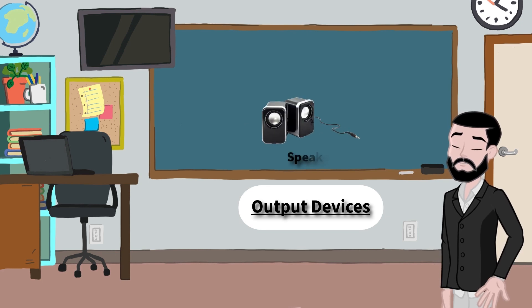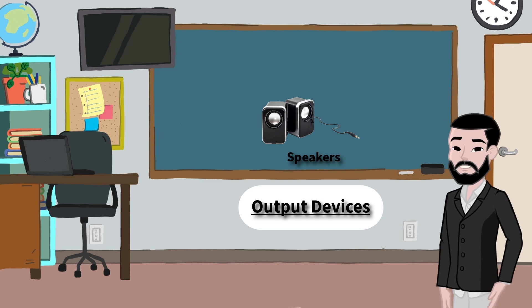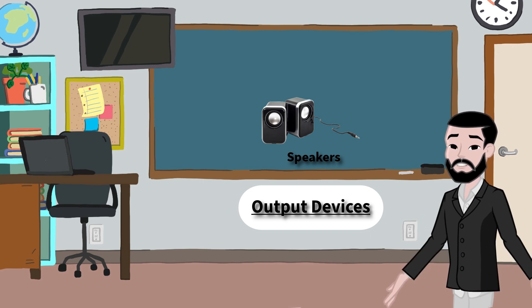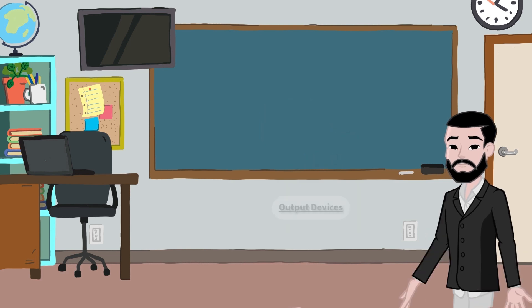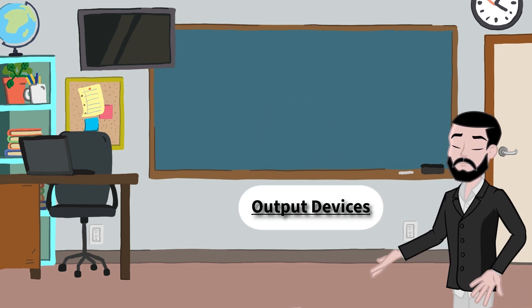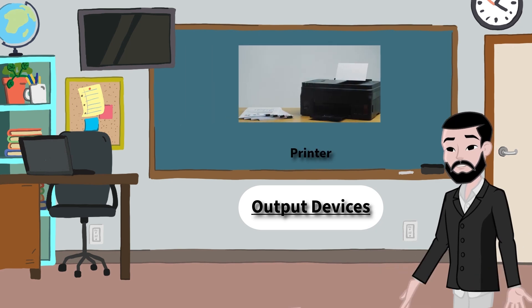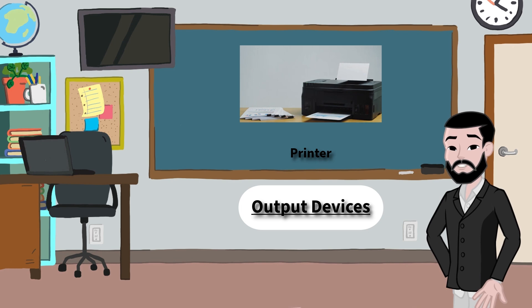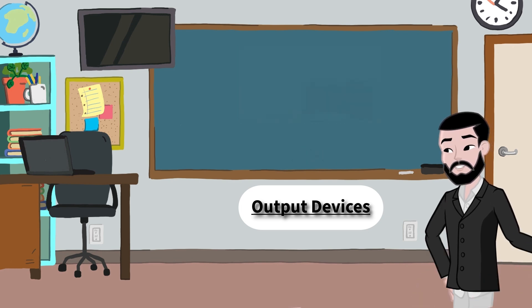Then there are the speakers. These play music, sound effects, and voices. Whether you're watching a video, listening to music, or playing a game, it's the speakers doing the talking. Need something on paper? That's what the printer is for. It takes files, drawings, and pictures from the computer and prints them out so you can hold them in your hands.